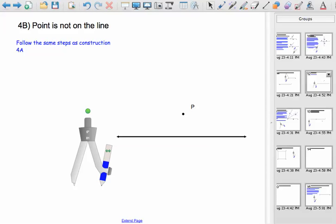Now with the last construction, point P was on the line. What happens if the point is off of the line, somewhere out here?